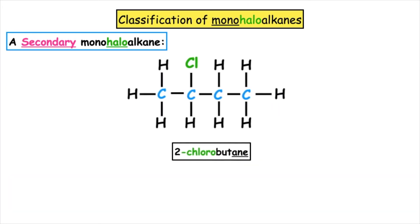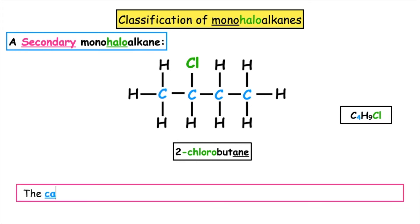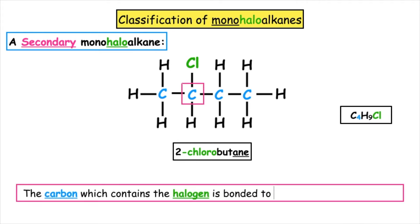For a secondary monohaloalkane, such as 2-chlorobutane, the carbon which contains the halogen is bonded to two other carbon atoms or two alkyl groups.